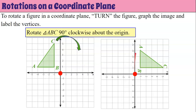Now that we can see what it looks like by turning your paper or your computer, we go plot our triangle on that graph. A prime is going to be at (1, 4), B prime is going to be at (1, 1), and C prime is going to be at (5, 1). This is our triangle rotated. So physically pick your computer up, turn it, see where it lands, and graph it.